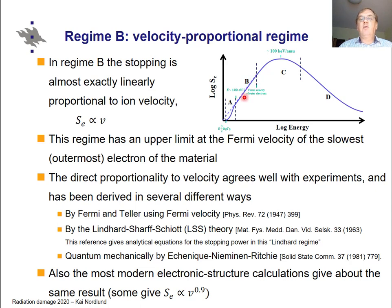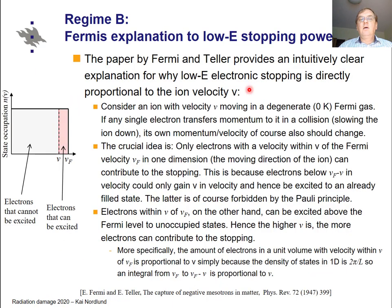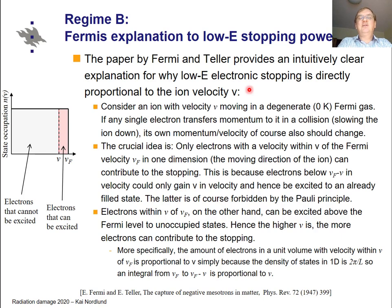In a log-log plot of stopping power versus energy, this also looks linear. But then why is stopping proportional to velocity? The oldest and simplest explanation — not exactly correct but at least qualitatively correct — was given by Fermi and Teller in 1947.